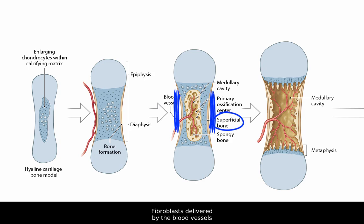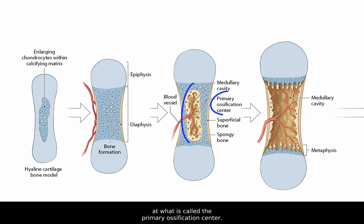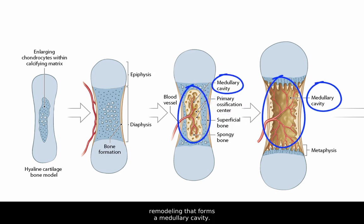Fibroblasts delivered by the blood vessels in the central region differentiate into osteoblasts and begin to produce spongy bone at what is called the primary ossification center. Over time the primary ossification center undergoes remodeling that forms a medullary cavity.